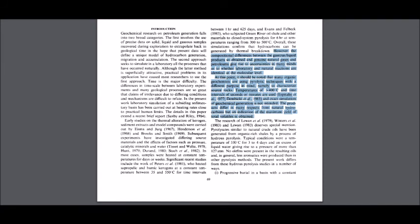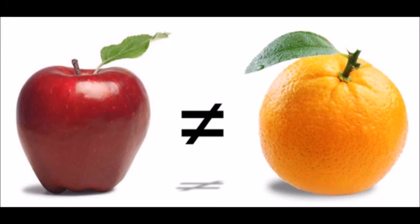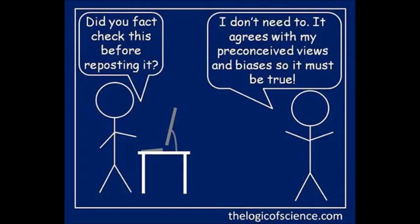Snelling cites the 1984 paper 'Petroleum Generation: Simulation Over Six Years of Hydrocarbon Formation from Torbanite and Brown Coal in a Subsiding Basin' that says, quote, 'the products differ in many respects from natural hydrocarbons,' close quote. Now, how can he wave an artificial product that is totally different from the natural product as evidence that the natural product can form quickly? Here, he seems to be hoping that you won't check his own sources.